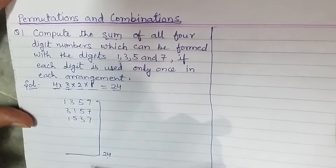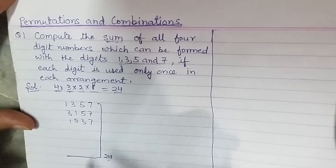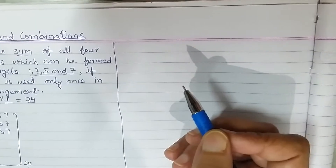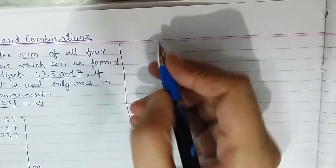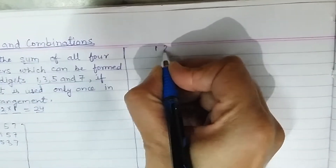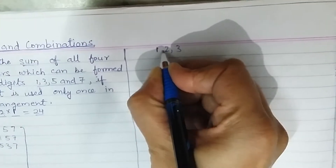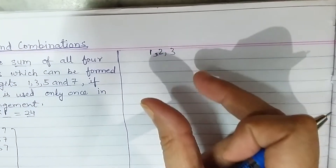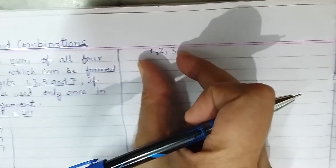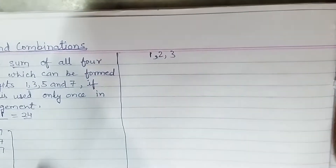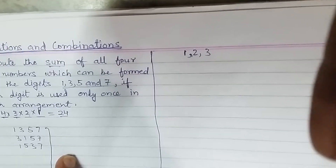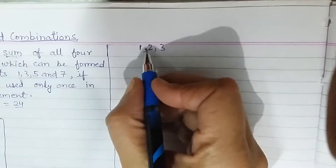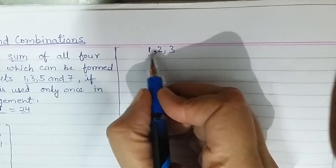To help you understand the trick, I will take a simpler example. Instead of four digits, I will take three digits: 1, 2, and 3. It will be easier to understand the method with three digits, and then we will come back to our original question.